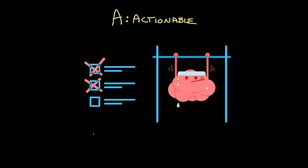A is for actionable. Can it be broken down into individual tasks? Yeah. Going to the gym three times a week to practice feels very actionable indeed. R is for realistic.